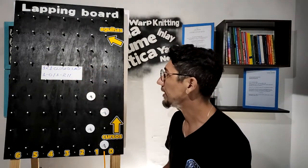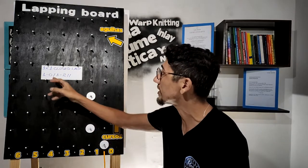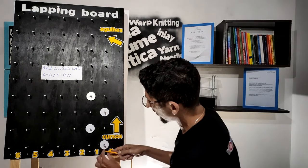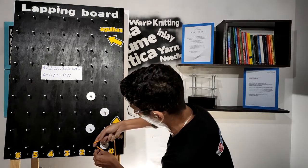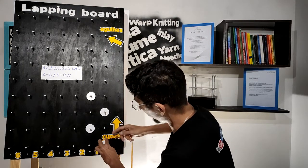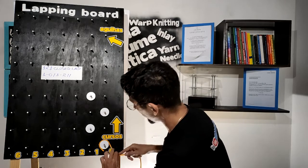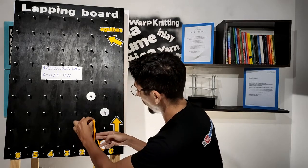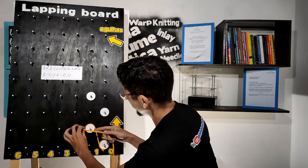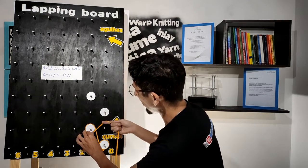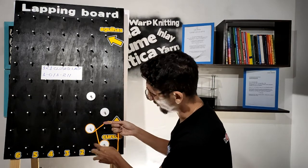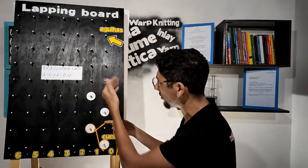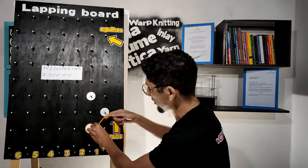The one-by-one closed lap has chain notation one-zero-zero-one-two. We need to go first on number one, after that zero, and one-two. Here we have finished the repeat, but we can continue on the next needles.